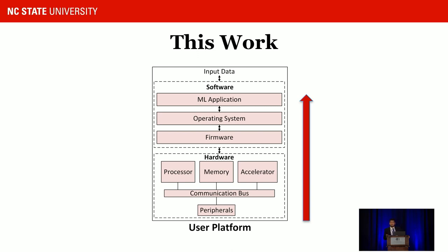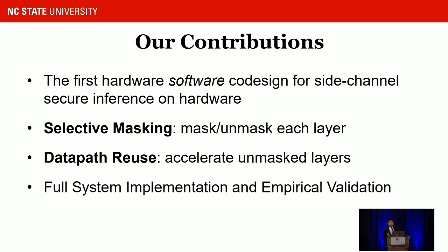Our contributions: we developed the first hardware-software co-design framework for secure machine learning inferences. We apply two key optimization techniques. First is selective masking, where we give the machine learning developer the option to mask or unmask certain layers. This is important because transfer learning is popular today — you may not want to secure parameters from initial layers that are already public. Only the final layers need securing, which saves performance and area. Second is data path reuse, which I'll describe in later slides.